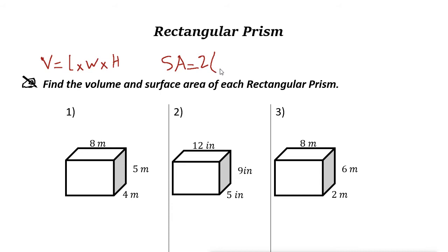So it's two times, then WH for one of them, plus LW, and then plus LH.